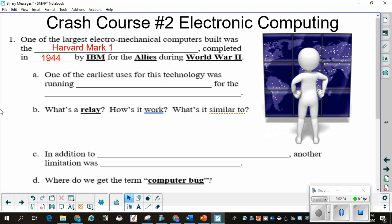Remember, wartime, it just tends to prompt a lot of innovation. Everybody's trying to get the latest and the greatest and the best thing to set them apart and put them in front. So, in 1944, the Harvard Mark I was created by IBM, International Business Machines, for the Allies during World War II. One of its earliest uses for this technology was running simulations for the Manhattan Project. The Manhattan Project was the atomic bomb.